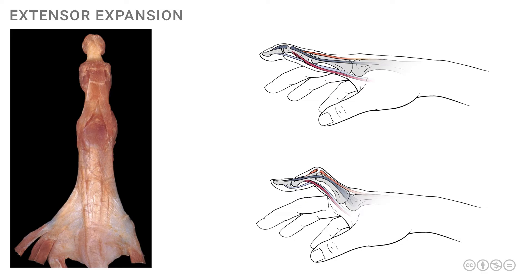Here we have one finger with the extensor expansion exposed quite clearly. In the lower part of the photograph, we have the proximal part of the finger with the extensor tendon entering the base of the digit. This then becomes expanded to form the extensor hood, as seen here. There are a number of fibers running in different directions.